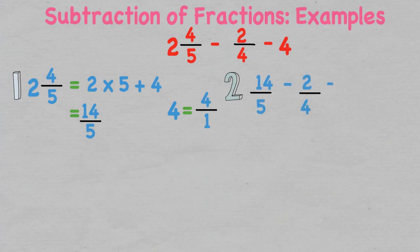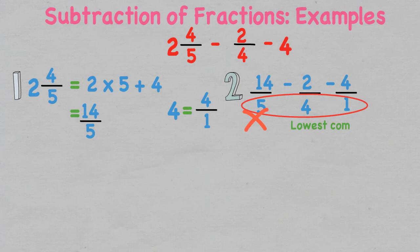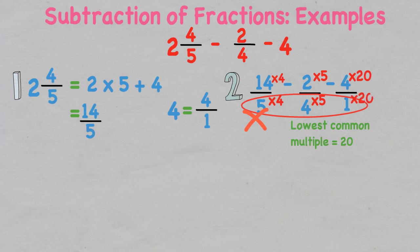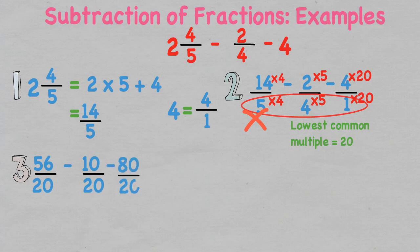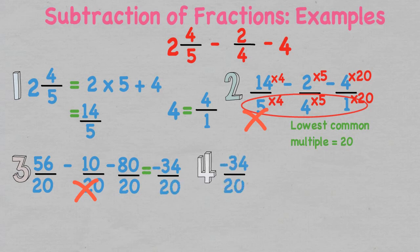The fractions are not alike so we need to find the lowest common denominator — in this case it is 20, as all denominators can go into 20. To convert 14 over 5 to over 20, we multiply the denominator by 4; whatever we do to the denominator we must do to the numerator, giving 56 over 20. For 2 over 4, multiply by 5; for 4 over 1, multiply by 20. This leaves us with 56 over 20, take 10 over 20, take 80 over 20. We subtract the numerators: 56 take 10 take 80 leaves us with negative 34 over 20.